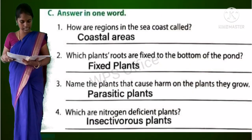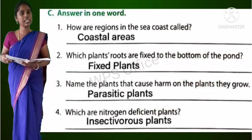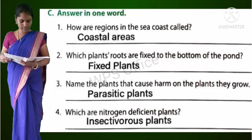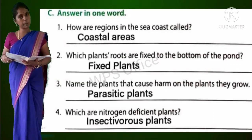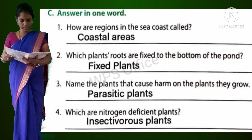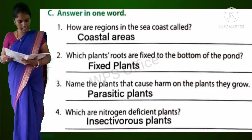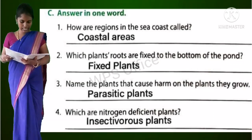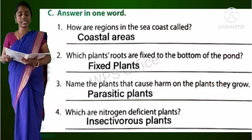Section C: Answer in one word. First question: How are regions in the seacoast called? Coastal areas. Second: Which plant's roots are fixed to the bottom of the pond? Fixed plants. Third: Name the plants that cause harm to the plants they grow on. Parasitic plants. Fourth: Which are nitrogen deficient plants? Insectivorous plants.